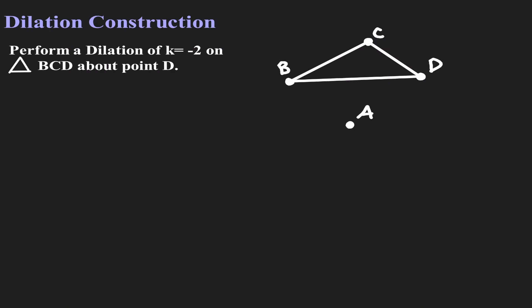Let's understand what we want to do here. We want to take triangle BCD and dilate it with a scale factor of negative 2 over point A. Note: there is a typo here, so let's correct it — point A.